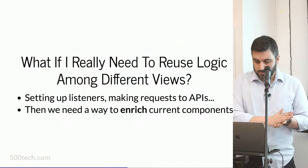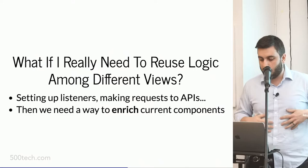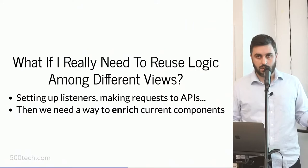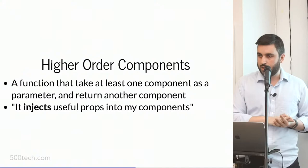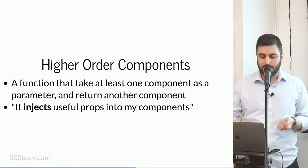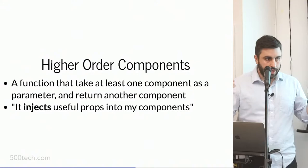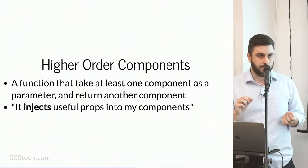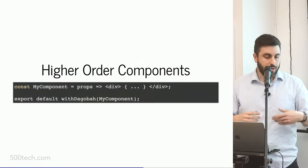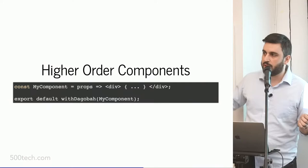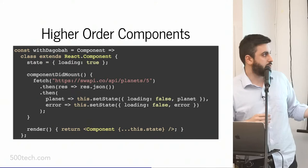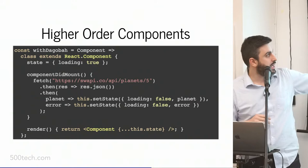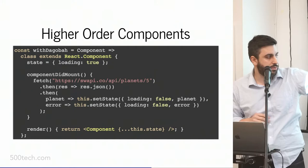The main question that arises now is: what if I need to reuse logic among different views? Setting up listeners is always cumbersome and we repeat a lot, so we need a way to enrich our current components. The first enrichment pattern is higher-order components — it's simply a function that takes at least one component as a parameter and returns another component. The way you think about it: it will inject some useful prop into my component. It's super simple to use — I have 'my component' doing whatever, and I want to inject Dagobah planet info, so I call 'with Dagobah' on my component instead of exporting it directly.